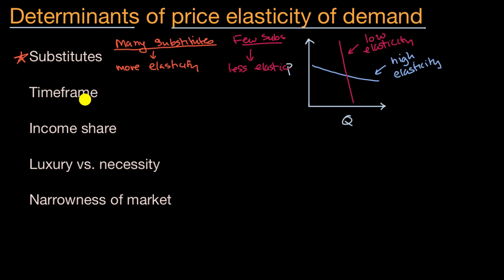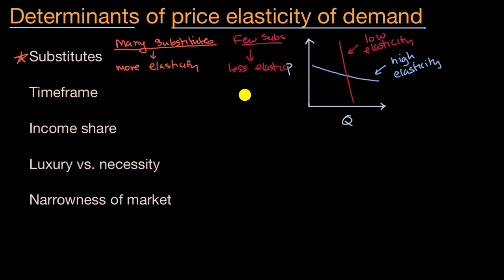What about timeframe? How does that affect elasticity? Imagine you are selling umbrellas and it is raining right now. In a short timeframe, while it is raining, you could probably raise the prices on umbrellas quite a bit. Assuming good foot traffic, a lot of people are probably going to be willing to pay that price. So in a short timeframe, things tend to be less elastic.